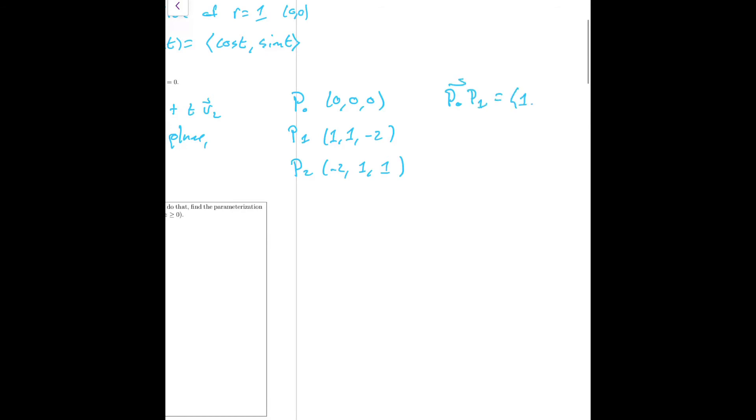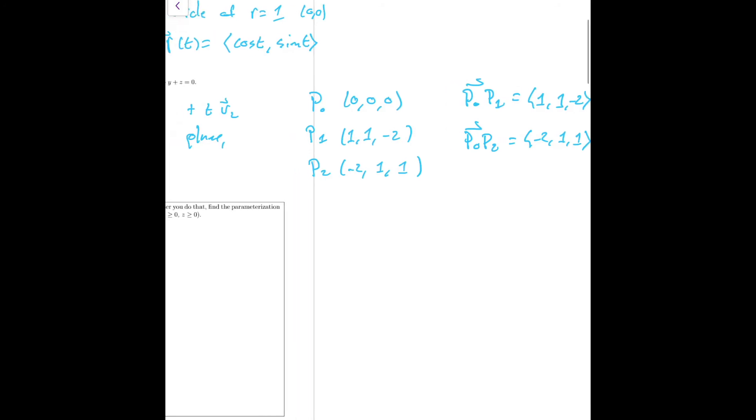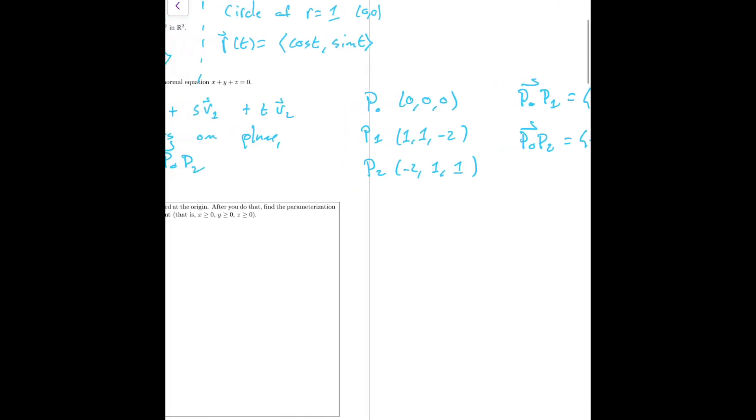So P₀P₁, this vector is (1, 1, -2), and P₀P₂, this vector is (-2, 1, 1). There are other choices, possibly simpler choices that we could have picked, but these are some of the choices.